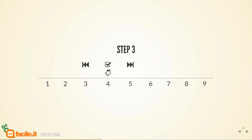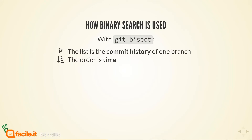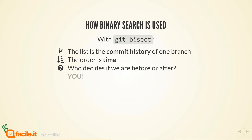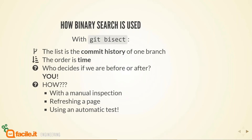Obviously this example is pretty trivial, but it was used just to show you how powerful and fast the algorithm is. With the git bisect command, this is useful because we search over the commit history of one branch. The order is given for free because the order is time — the order of commits inside the history. We just need one piece of information: to decide if our cursor is before or after what we are searching for, i.e., whether a given commit contains the bug. You can decide that through manual inspection, by refreshing a page of your project to see if the bug is present, or even by using an automatic test like a PHPUnit test that goes red if the bug is present.